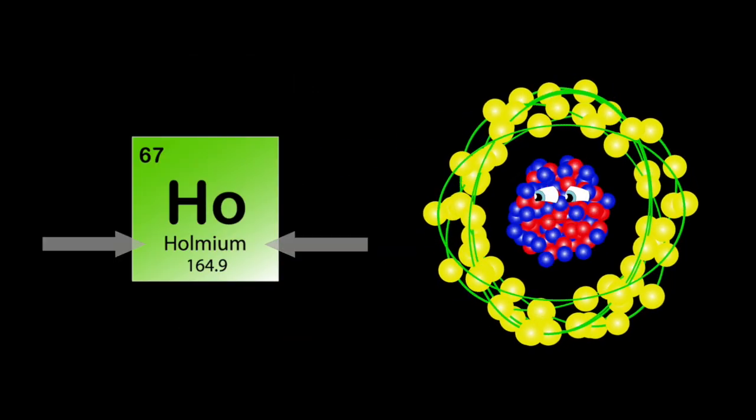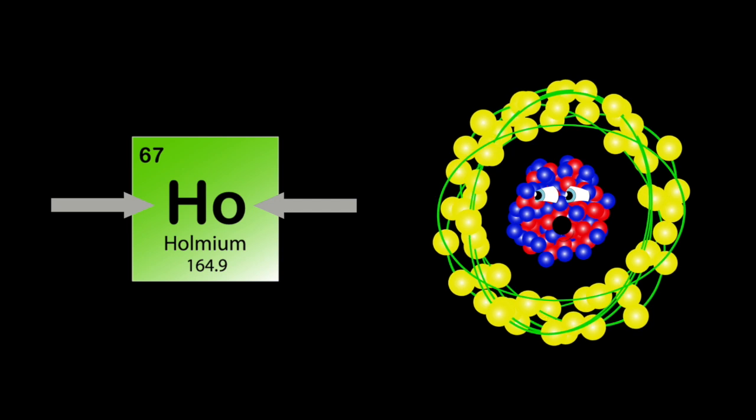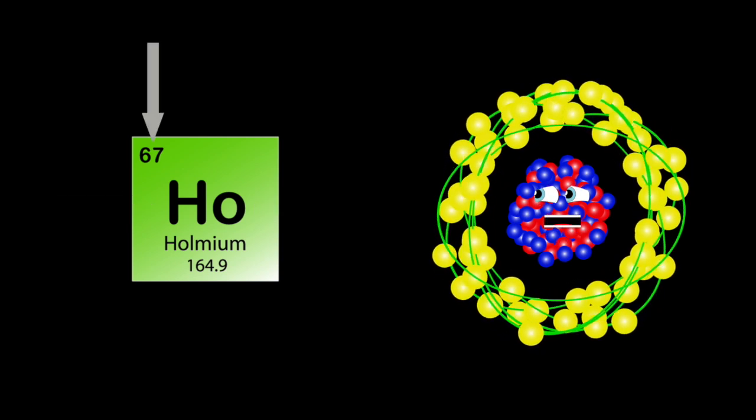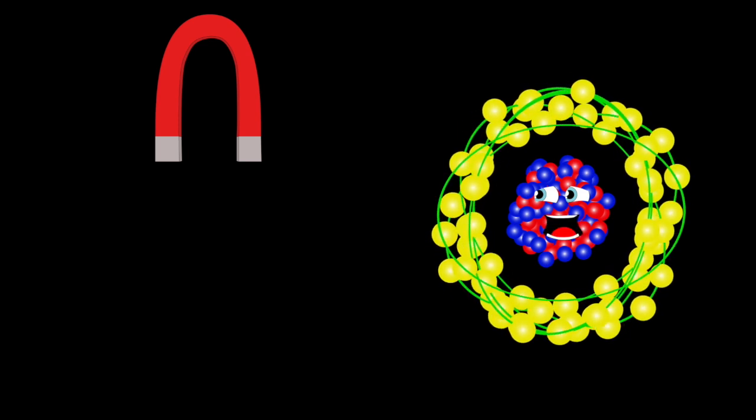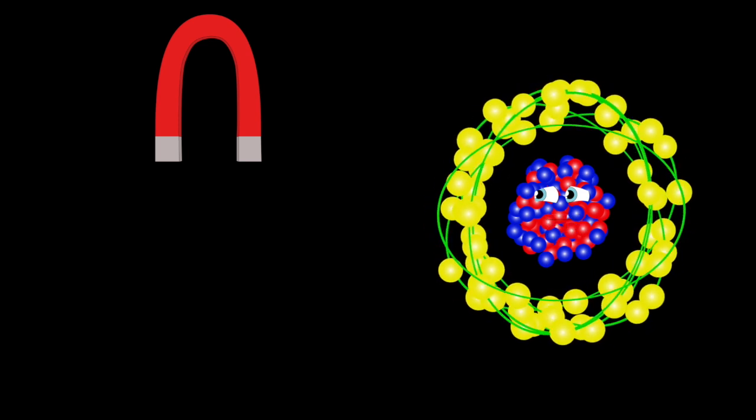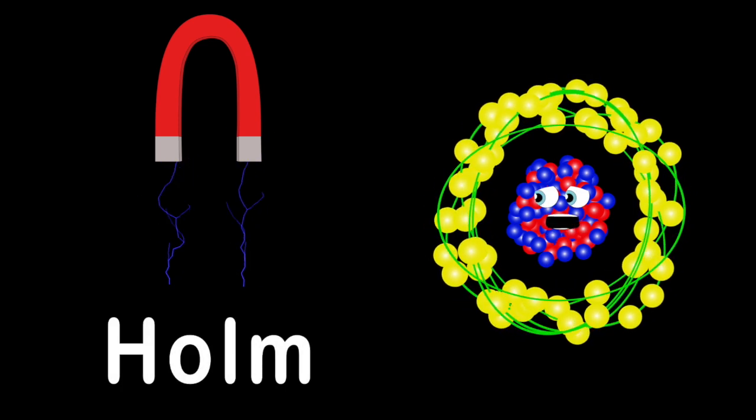I'm holmium, my symbol is HO, atomic number's 67, my atomic mass is 164. I'm used in magnets for my magnetic properties, my name comes from the Latin word Holme, as you can plainly see.